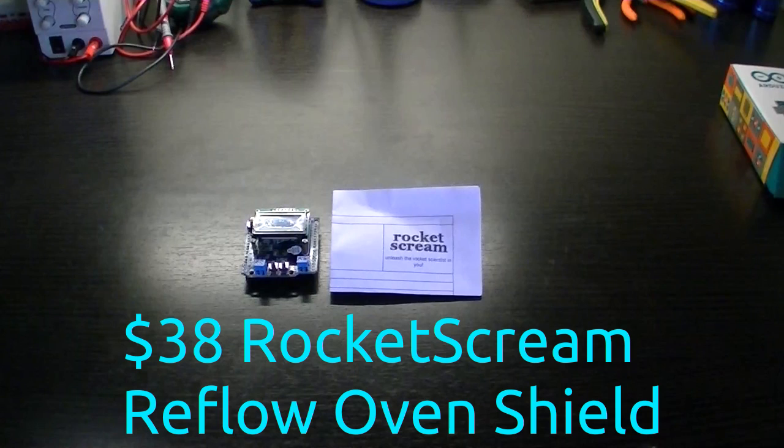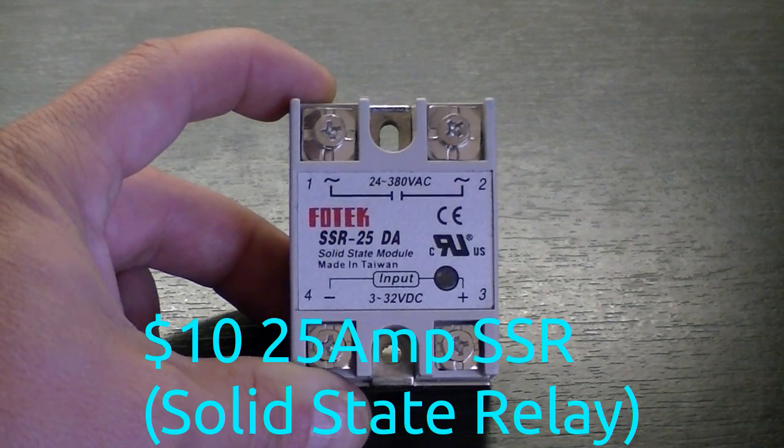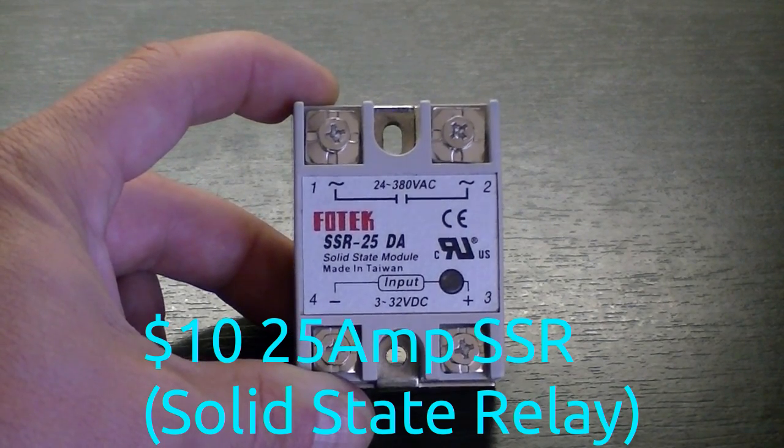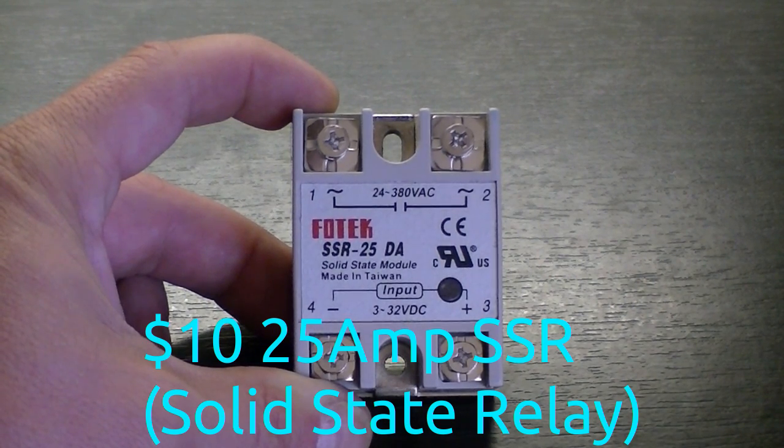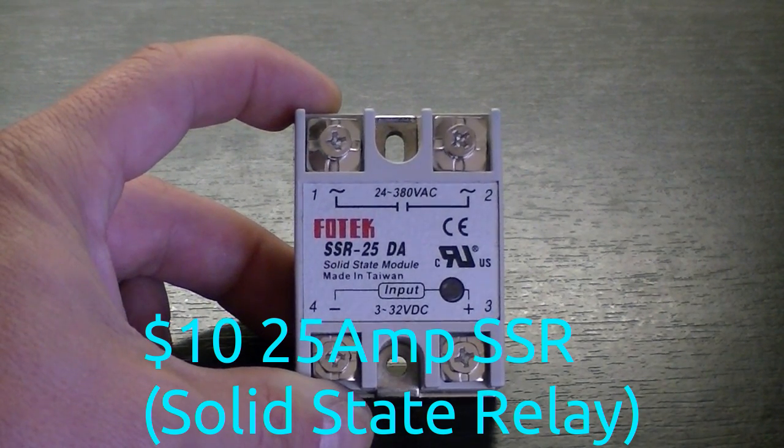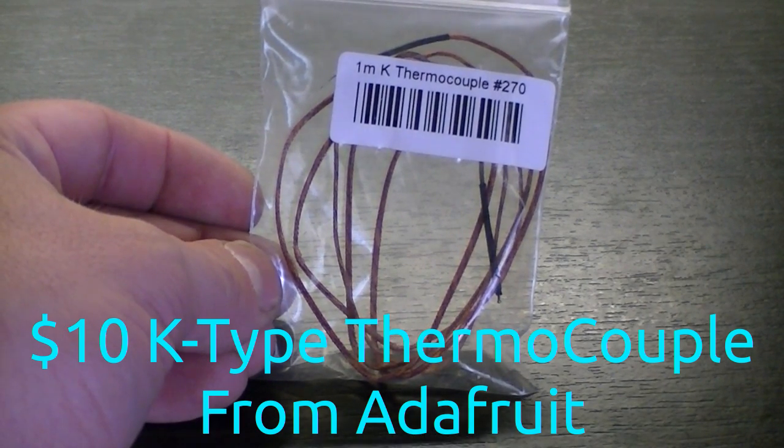One rocket scream toaster reflow oven shield, one 25 amp solid state relay with an input voltage of 3 to 32 volts DC and the AC switched from 24 to 380 volts AC.